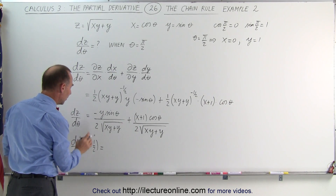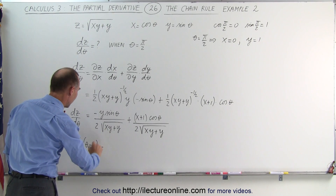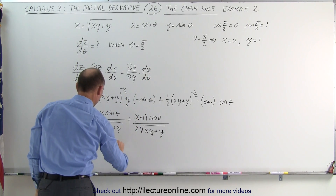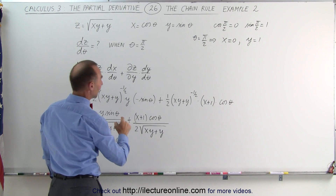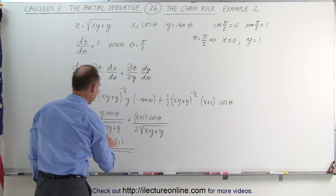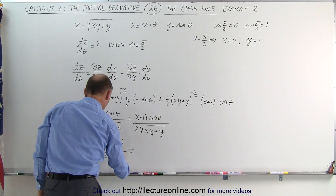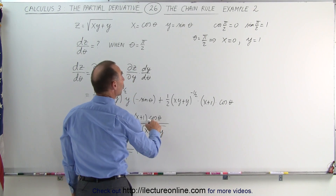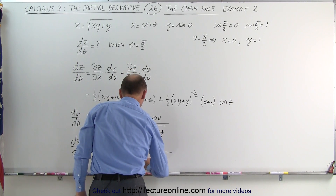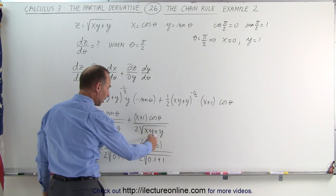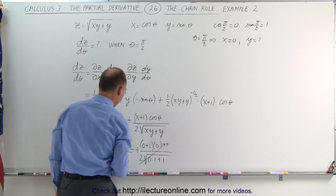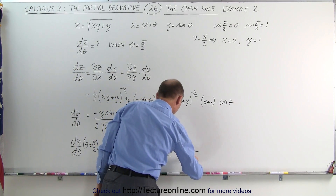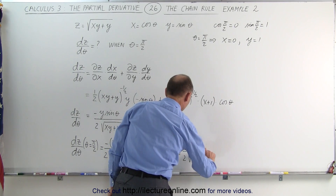We now take the derivative of z with respect to theta evaluated at theta equals pi over 2. This is equal to: minus y — y is 1 — times sine of theta — sine of pi/2 is 1 — divided by 2 times the square root of x·y plus y, where x equals 0, giving us 0·1 + 1. The second term has (x+1)·cosine(theta) = (0+1)·0 = 0 in the numerator, so that fraction is 0. This leaves minus 1 divided by 2 times the square root of 1, which equals negative 1/2.